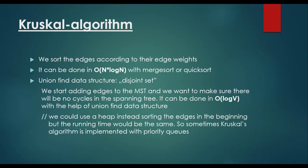Kruskal's algorithm: first we sort the edges according to their edge weights, which can be done in O(n log n) with algorithms like merge sort or quicksort. Then we use the union find data structure. We start adding edges to the minimum spanning tree, ensuring there are no cycles. Cycle detection can be done in O(log v) with the union find data structure.